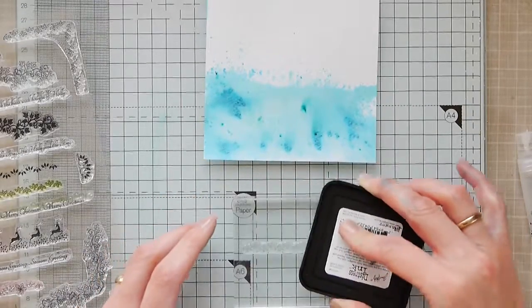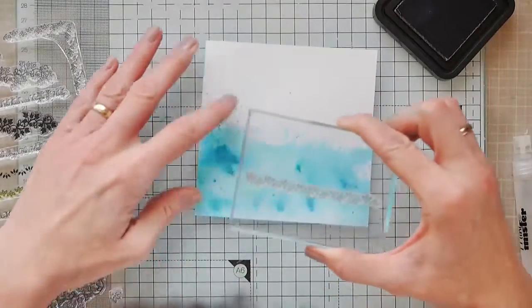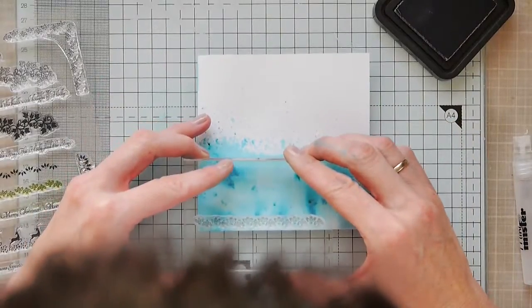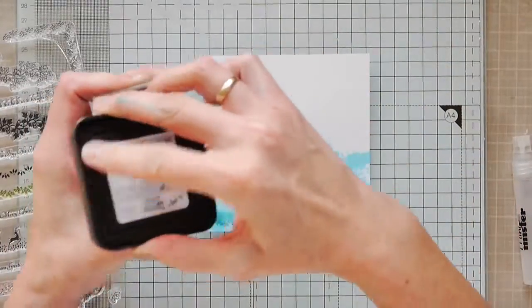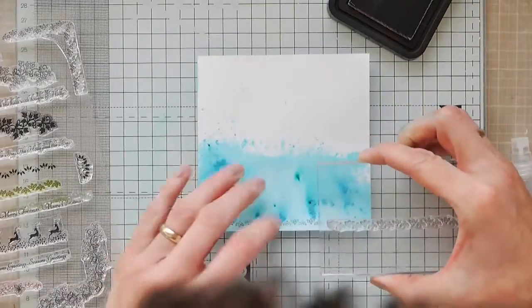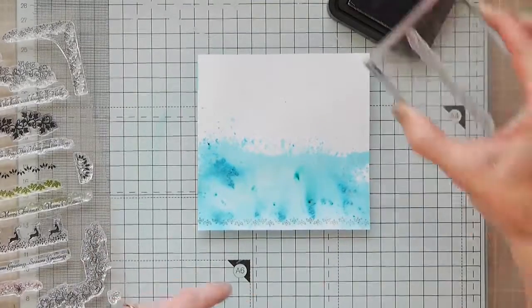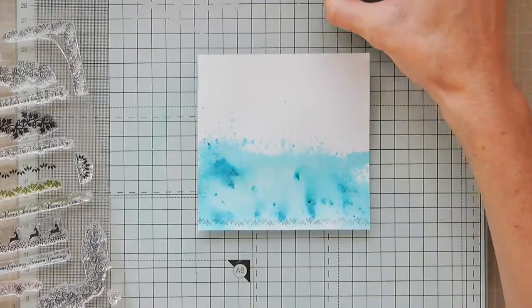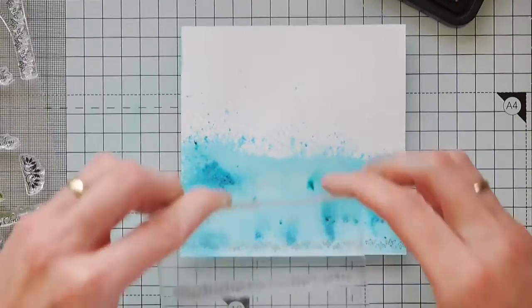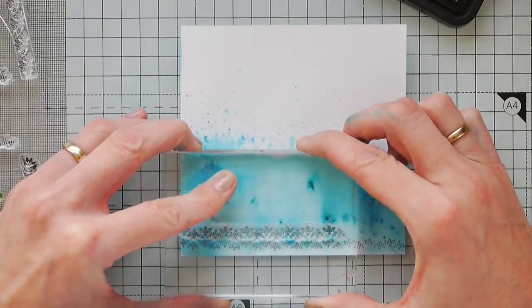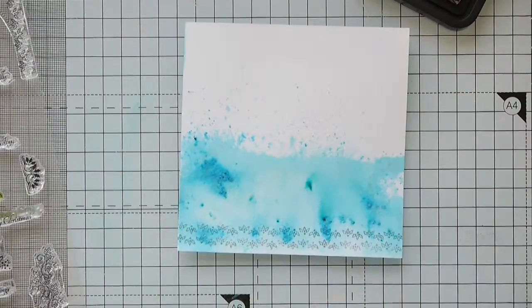You can choose whichever colour you like. Obviously black would make it darker in the background. But I don't want this to be too bold in the back. I just want it to be a nice subtle background. So I'm just going to stamp there. And re-ink as I go along. And we can just pattern match and move the stamp across. So we get stamping all the way evenly across the page there. So I think I'll do two lines with this.